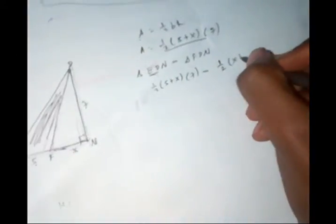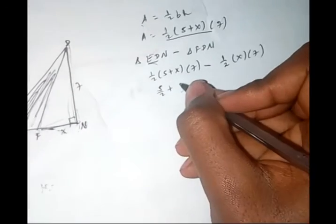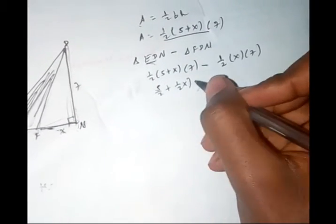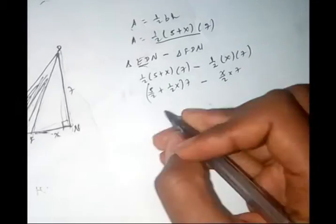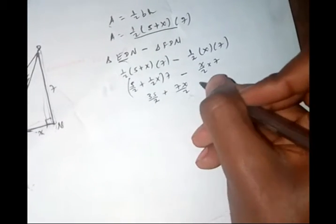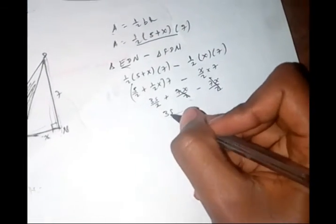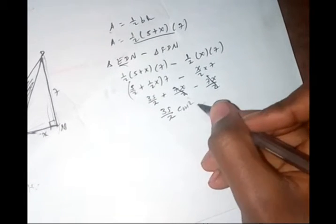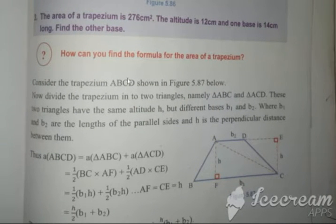So the area of the shaded part is in meter squared. Now perimeter of trapezium. Let's consider the trapezium.